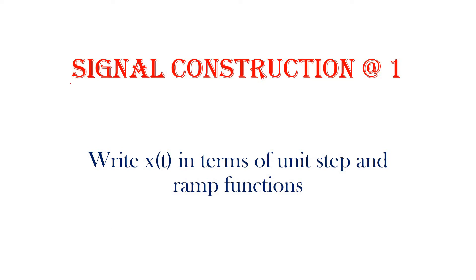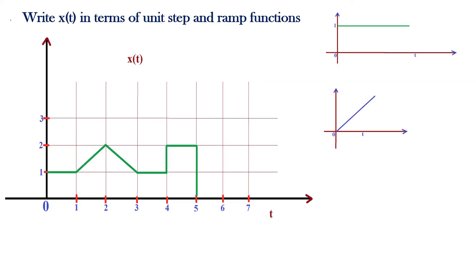In this video I am going to explain how to write the equation x(t) from a given signal. x(t) is written in terms of unit step and ramp functions. Consider this problem: write x(t) in terms of unit step and ramp functions. This function is known as the unit step function, and this one is known as the unit ramp function — it looks like a ramp. The unit step signal looks like a step.